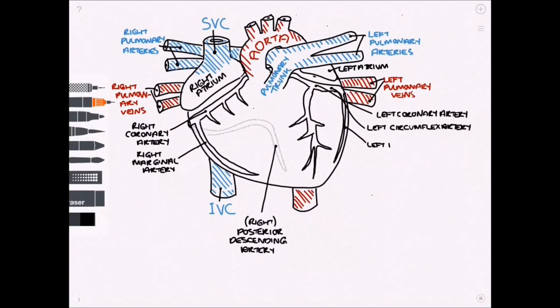Around this side, similar onto the right hand side, we've got a left marginal artery which branches from the left circumflex. And then round onto the back we have got a continuation of the left circumflex artery.